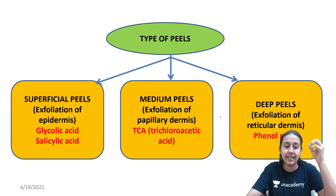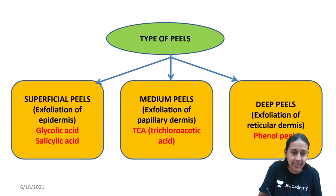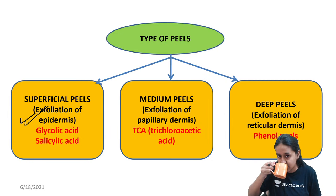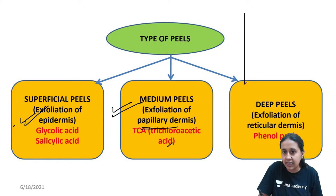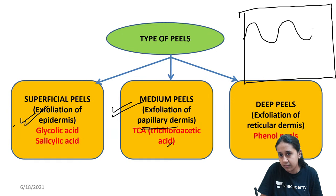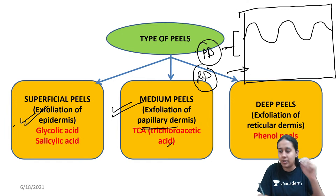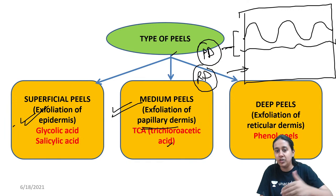Chemical peels are of three types. Superficial peels exfoliate only up to the epidermis — examples are glycolic acid and salicylic acid. Medium peels exfoliate up to the papillary dermis. Remember, the upper part of the dermis is called the papillary dermis and the lower part is the reticular dermis. Deep peels can reach even up to the reticular dermis.